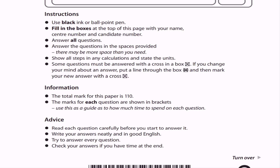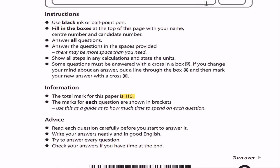Some questions must be answered with a cross in a box. If you change your mind about an answer, put a line through the box, then mark your answer with a cross. The total mark for this paper is 110. The marks for each question are shown in brackets — use this as a guide as to how much time to spend on each question. Read each question carefully before you start to answer it. Write your answers neatly and in good English. Try to answer every question. Check your answers if you have time at the end.